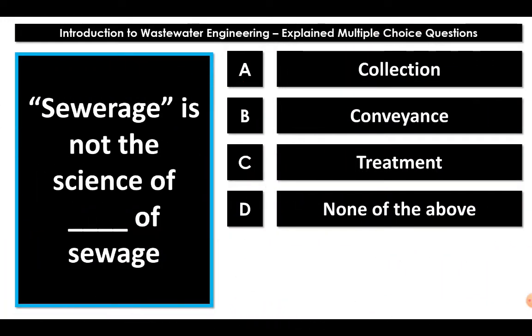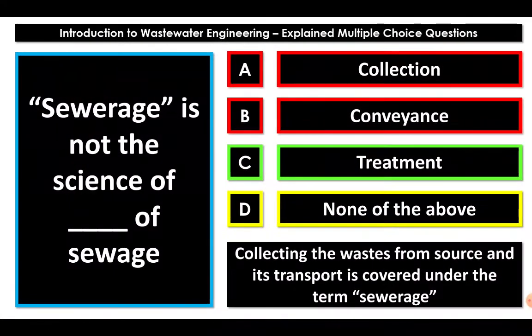Question: the term sewerage is not the science of blank of sewage — collection, conveyance, treatment, or none of the above? When we say sewerage, we are dealing with collection of wastewater from the point of generation and transporting it to the treatment plant. It does not include treatment of the sewage. Therefore, sewerage is not the science of treatment of sewage — it is the science of collection and conveyance, that is, collecting and transporting the waste.